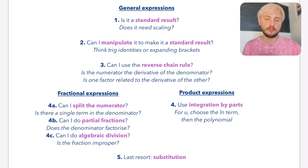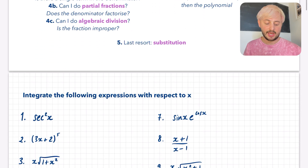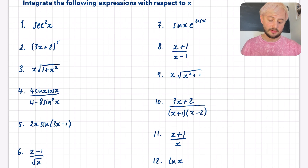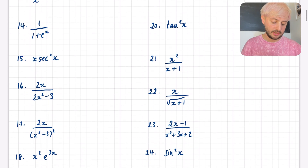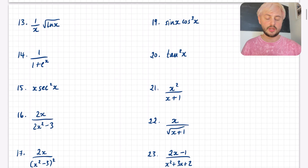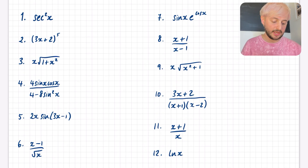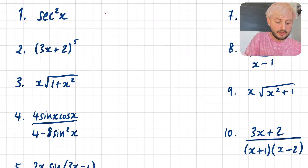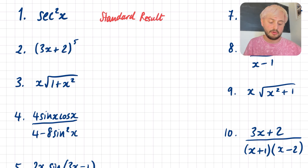Let's look at some questions and figure out what techniques to use. I'm not going to do the entire question, just identify the technique. So I've got 12 questions here — integrate the following expressions with respect to x — and on the next page another 12, giving 24 in total. Question 1: integrate sec²x. This is a single term and I'm hoping you'll recognise it as just a standard result. You should have memorised that tan differentiates to sec squared, so that's going to be pretty easy.